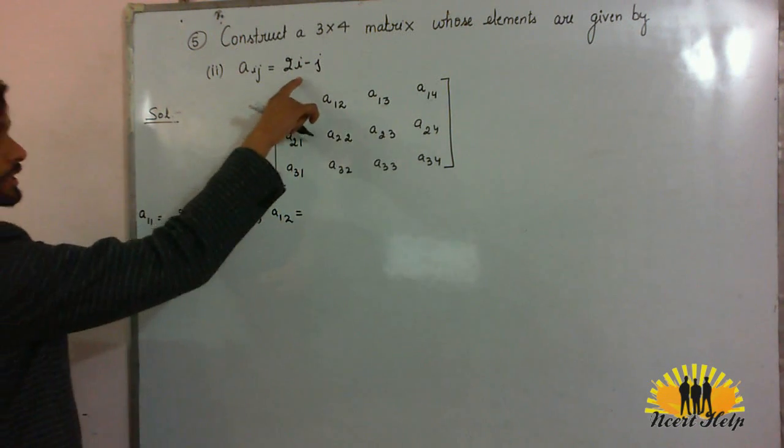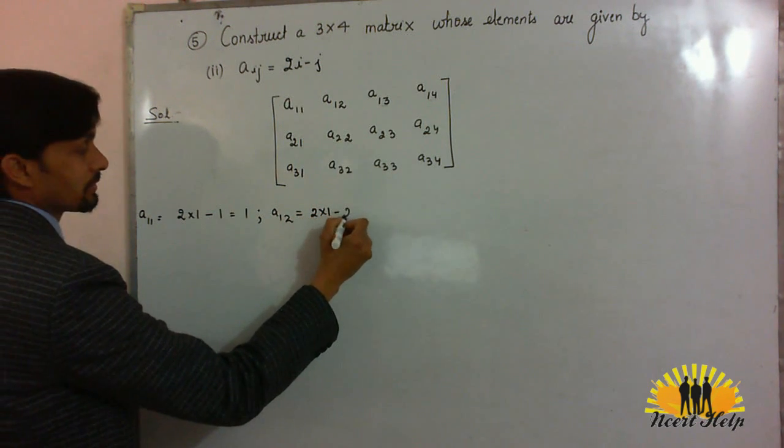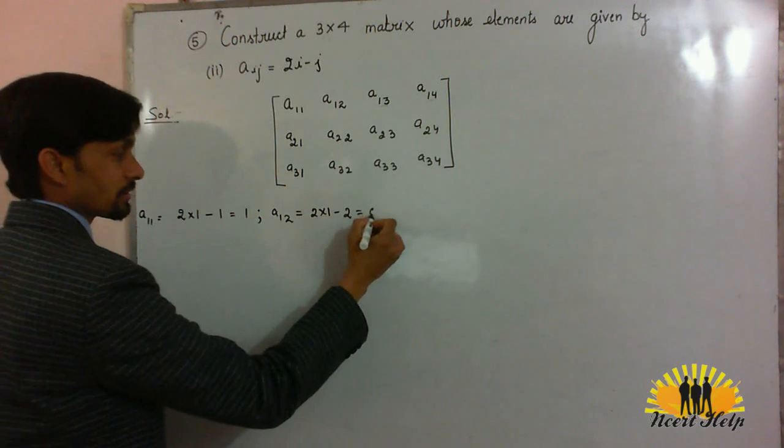A12, put here 2 into 1 minus 2. 2 minus 2, it is 0.